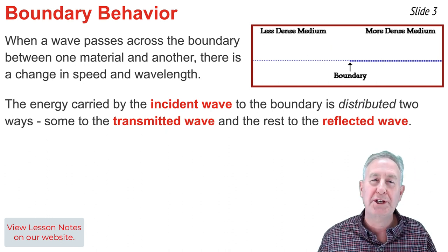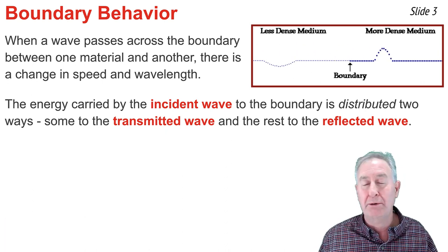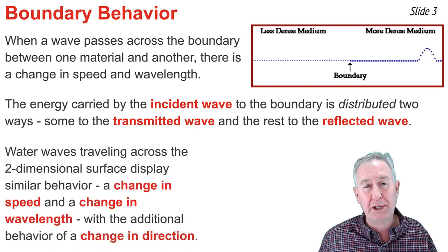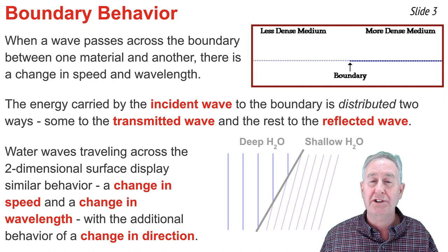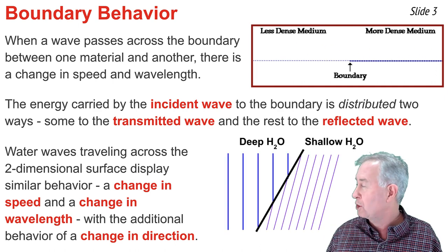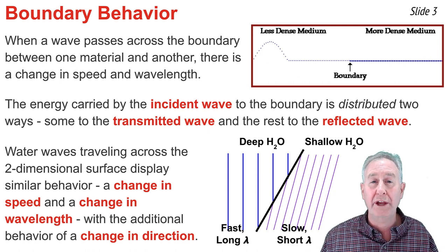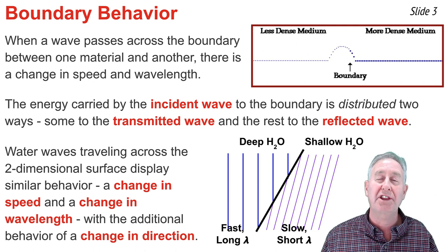The above situation pertains to a pulse traveling across a one-dimensional medium, such as a rope. But a very similar behavior takes place when you have a wave traveling across a two-dimensional medium. For instance, consider a water wave traveling through deep water and approaching the boundary with shallow water. The water wave is traveling fast and has a longer wavelength in the deep water, and is traveling slower and has a shorter wavelength in the shallow water.